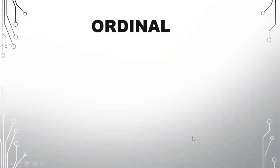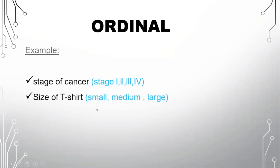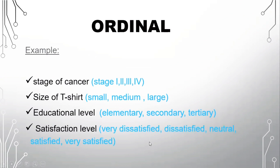For some examples, we have stage of cancer: we have stages 1, 2, 3, and 4, so it's ordered. Size of t-shirt: we have small, medium, and large. Educational level: elementary, secondary, and tertiary. And we have the satisfaction level: very dissatisfied, dissatisfied, neutral, satisfied, and very satisfied. So these are just some example of ordinal scale. So always remember, ordinal, we have order.